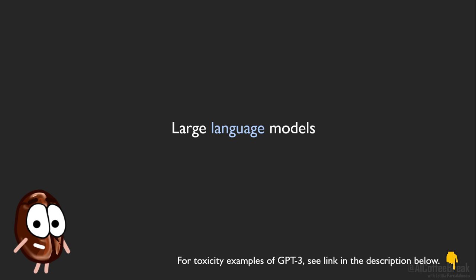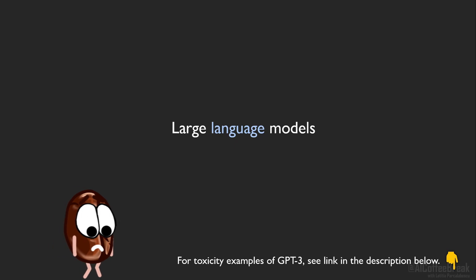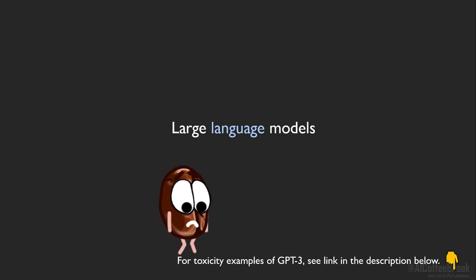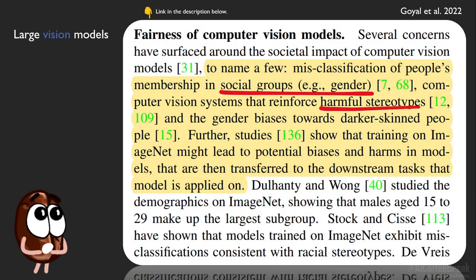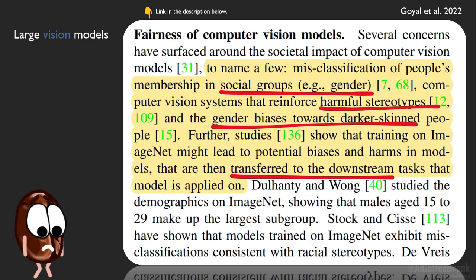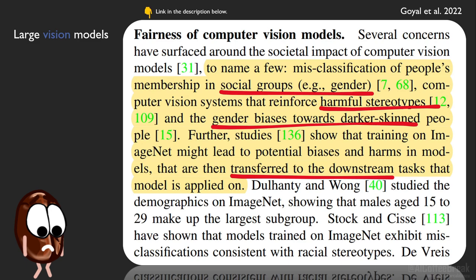Large self-supervised models do seem to follow the garbage in, garbage out principle. Just think about GPT-3, trained on large datasets scraped from the internet — it produces toxic output, false information, conspiracy theories, and exhibits sexism and racism. But today we are not concerned with text models, but with large self-supervised vision models. On the vision side, the toxicity meter is high too, because large vision models trained on ImageNet reflect the biases in the data. ImageNet contains problematic content, is biased by covering some geographical locations and races more than others. So no wonder that vision models reflect these biases too.